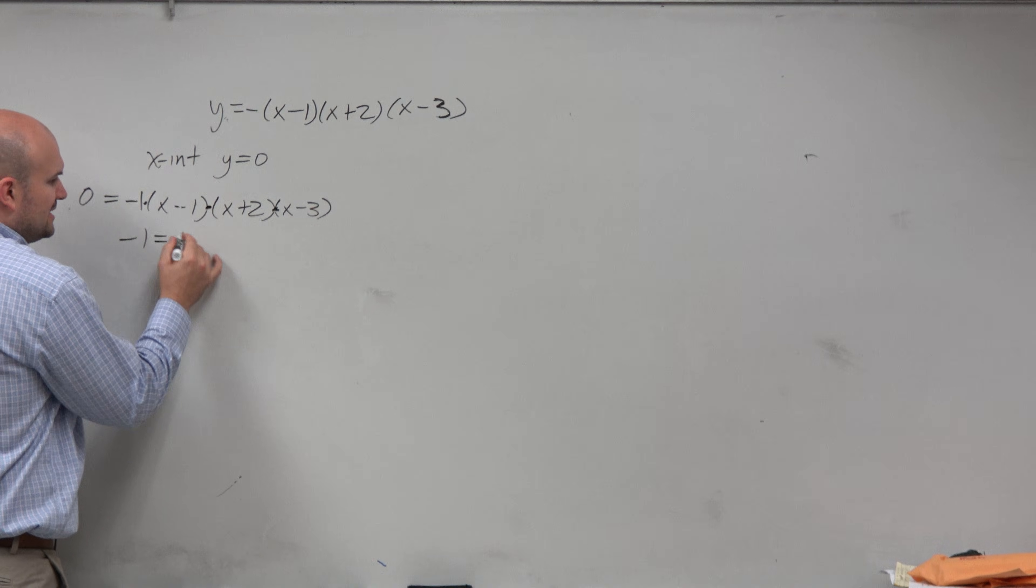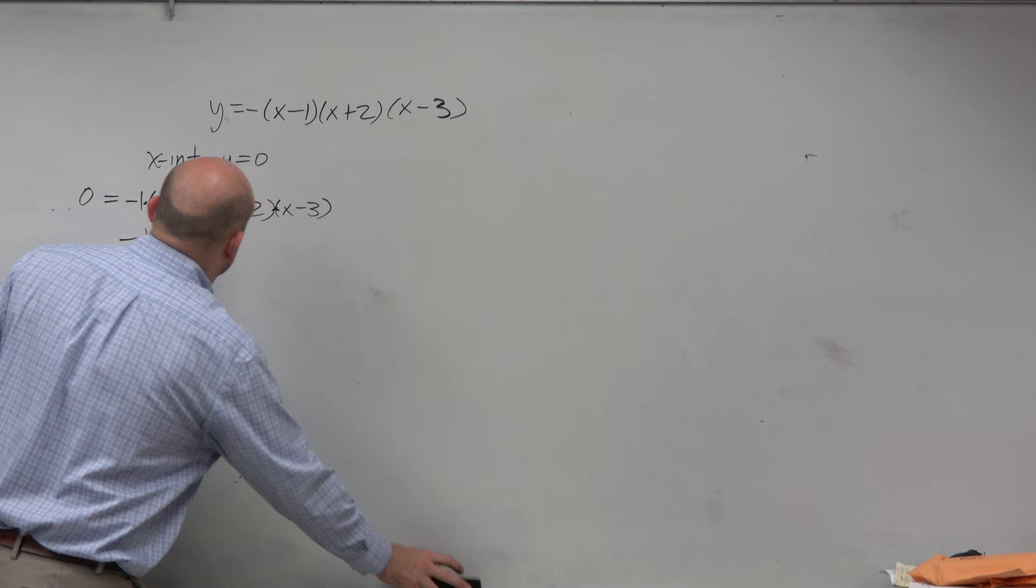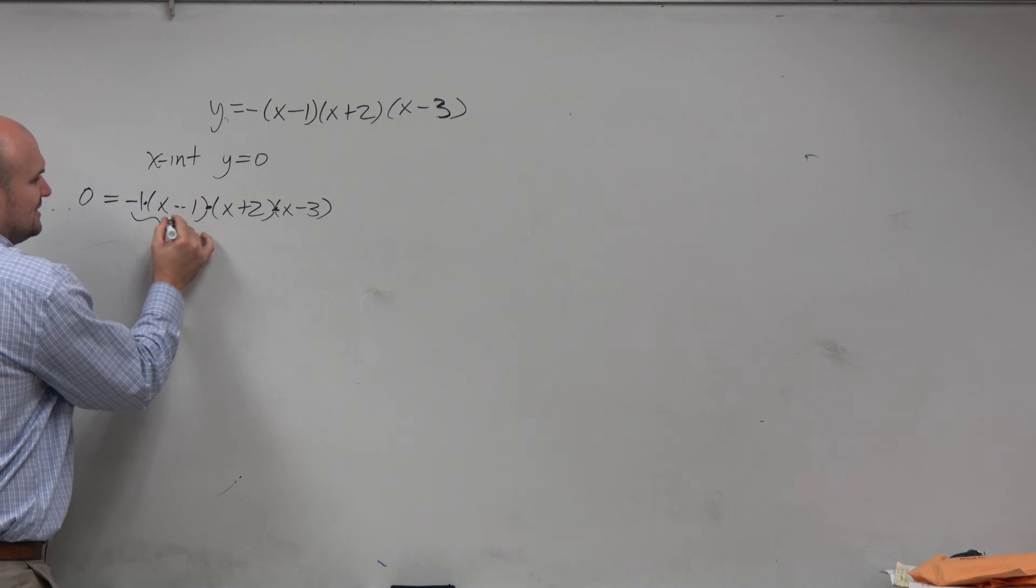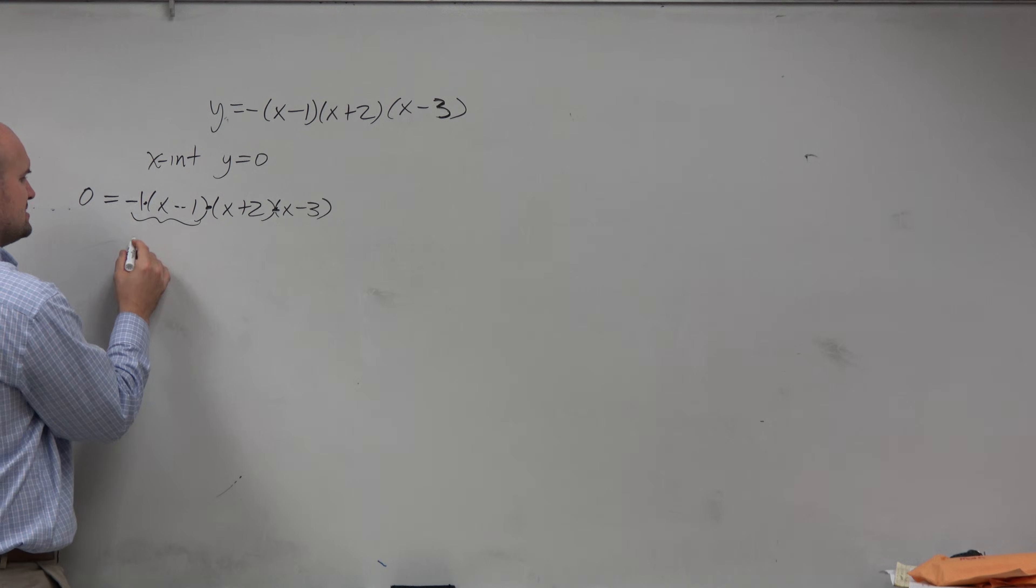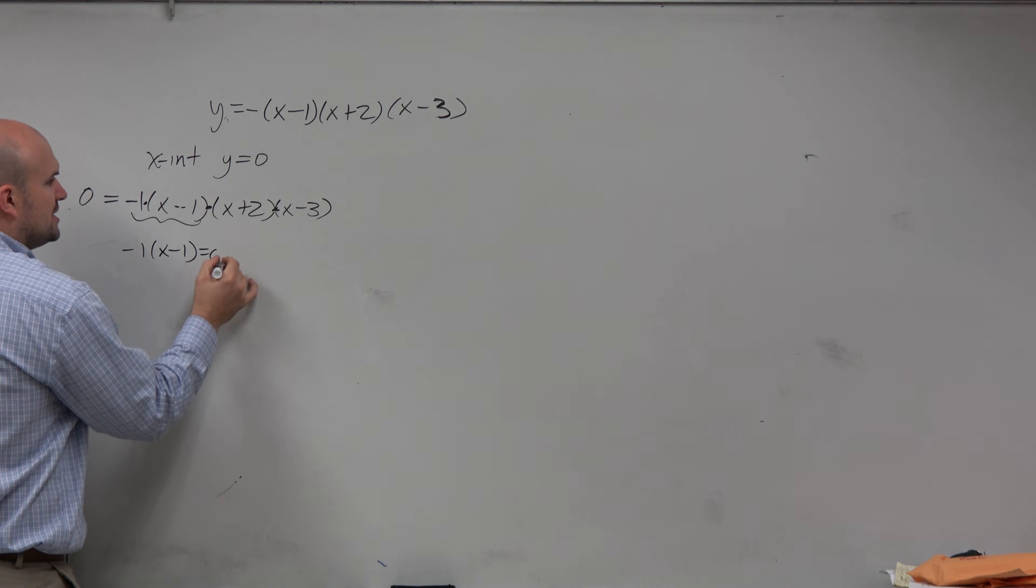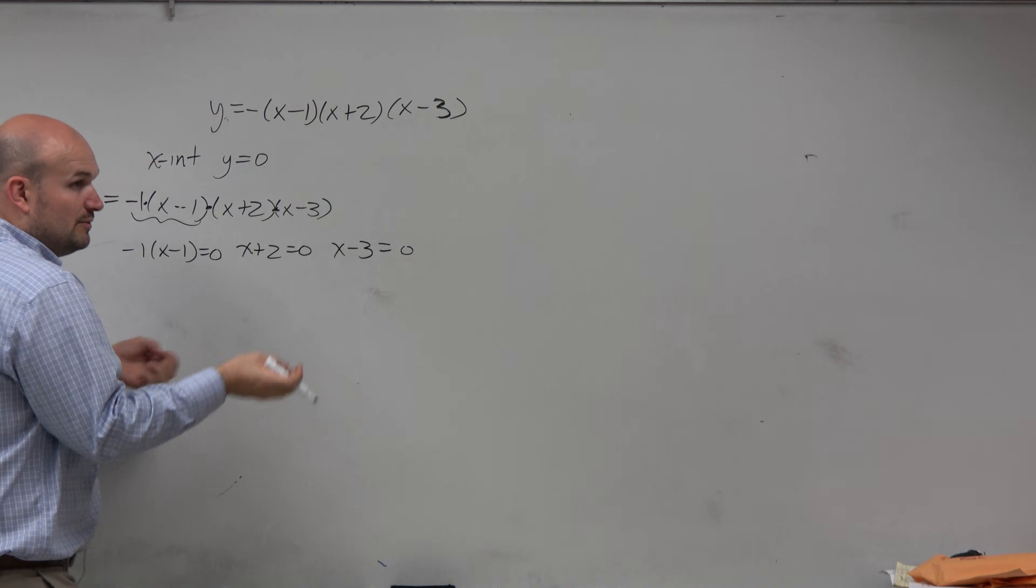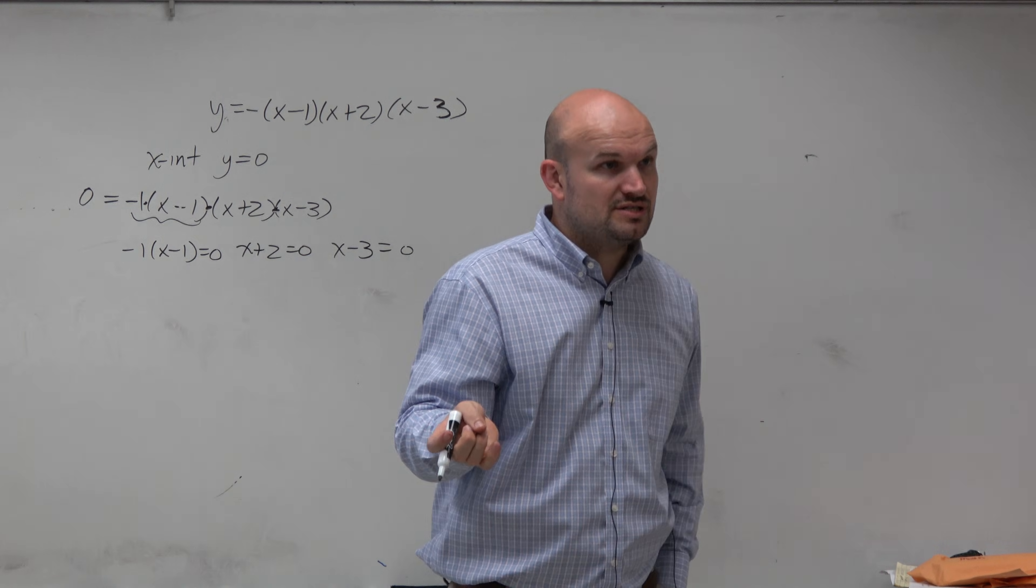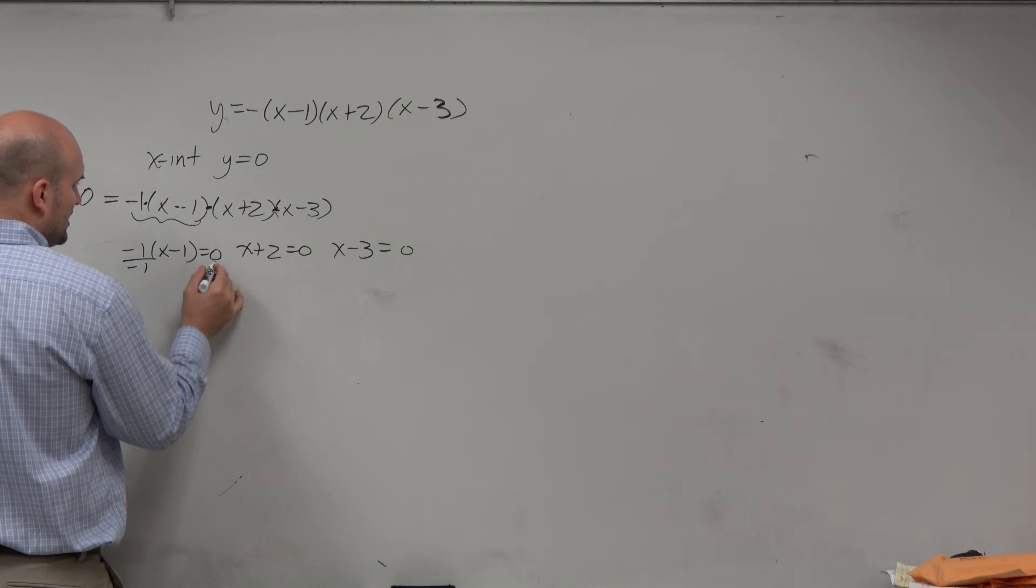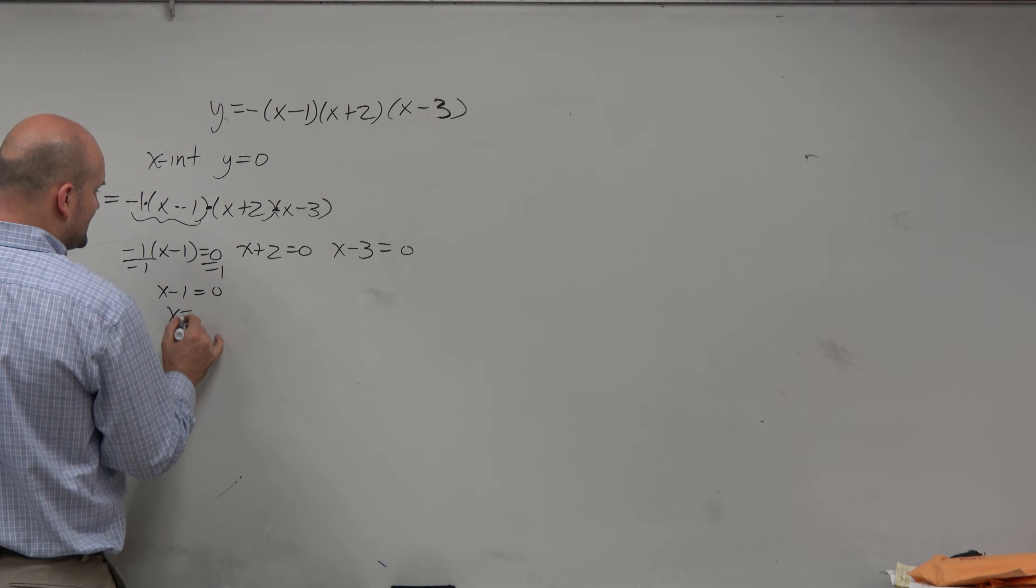Now, does it make sense for me to set negative 1 equal to 0? No, right? We want to make sure you have a variable with that. So I'm just going to combine the negative 1 with this. So I have negative 1 times x minus 1 equals 0, x plus 2 equals 0, and x minus 3 equals 0. Can we now solve each and every one of those equations? Yes, it's not too bad. Now here I divide by negative 1 on both sides, so I have x minus 1 equals 0. So you could say x is equal to 1.